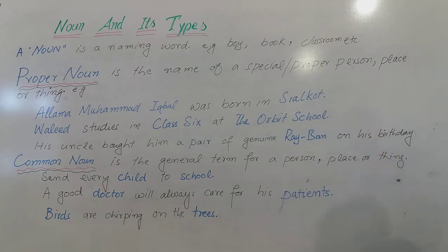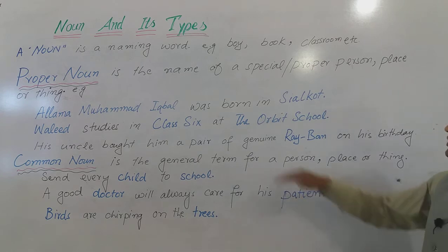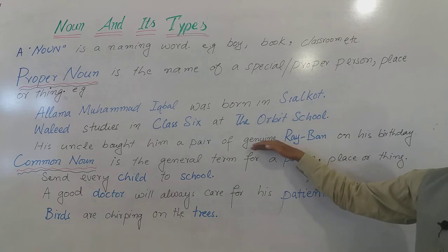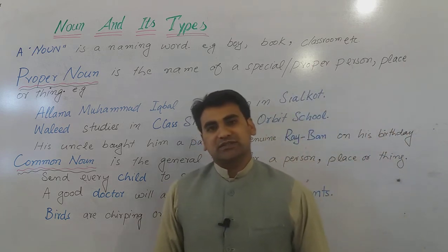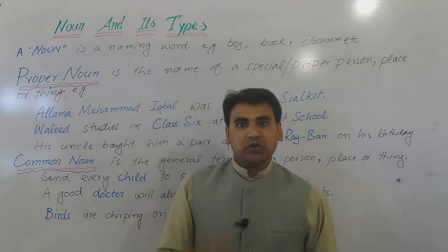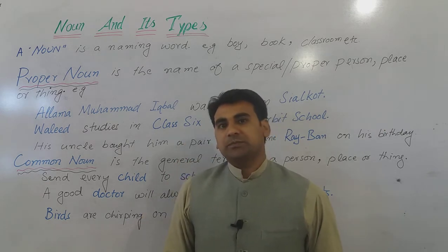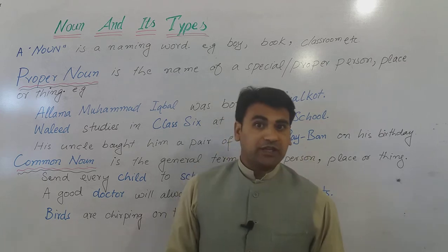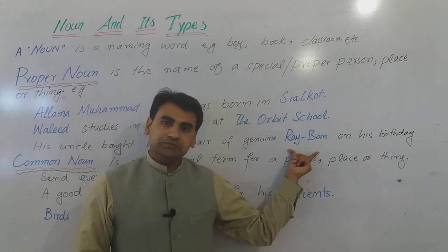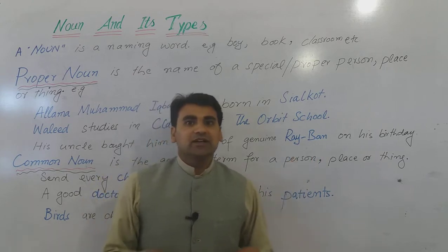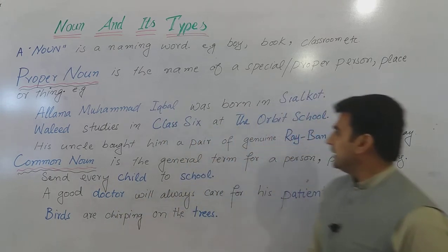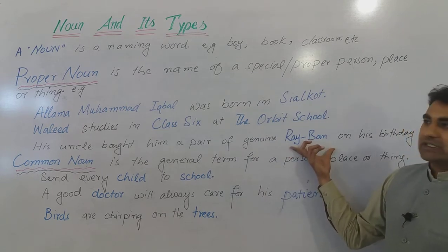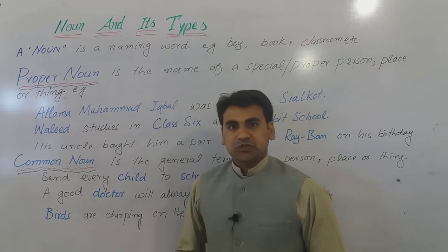His uncle bought him a pair of Jinnah Rayban on his birthday. Rayban is a brand of goggles — glasses — ایناکوں کے ایک خاص brand کا نام Rayban ہے۔ That is why Rayban is a special thing and it becomes a proper noun. So a proper noun is the name of a specific person, place or thing.